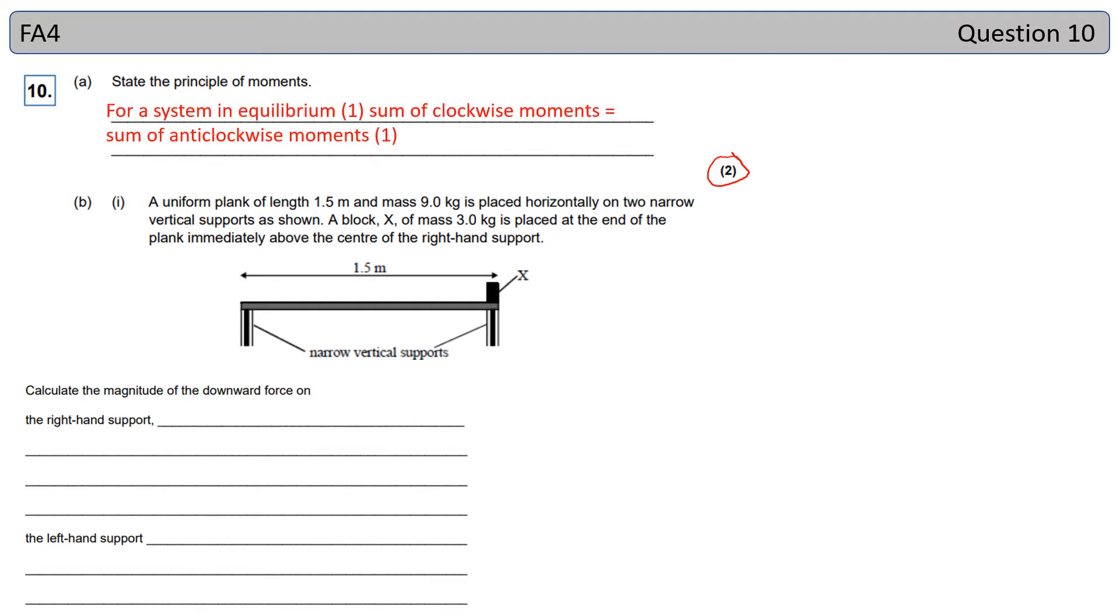You get your first mark for saying that for a system in equilibrium and the second mark for saying the sum of clockwise moments is equal to the sum of anticlockwise moments. It's really common for students to get the second mark but not the first.